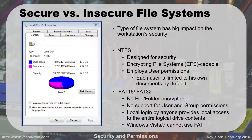With our file systems, we have secure and insecure file systems. The two big ones we deal with are NTFS and FAT. NTFS is our New Technology File System; FAT is our File Allocation Table. NTFS was designed with security in mind — it lets you use the Encrypted File System and allows permissions down to the file or folder level. You can choose individual users or groups that have permissions.